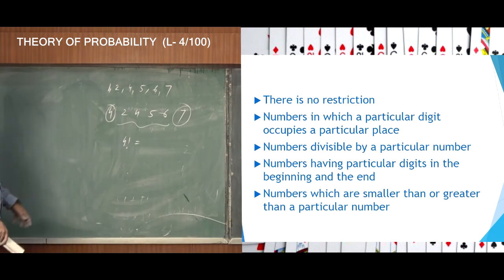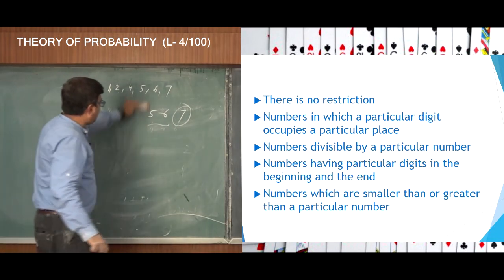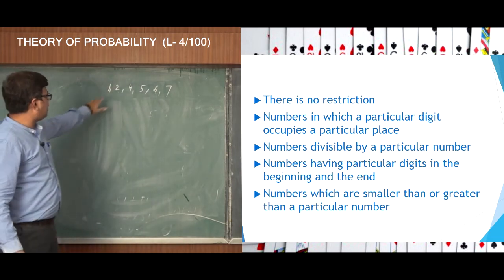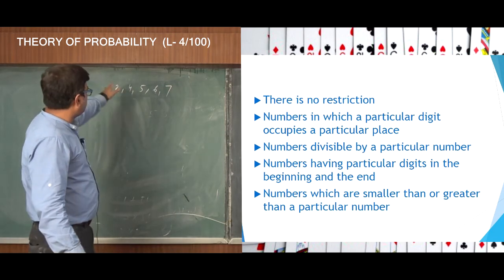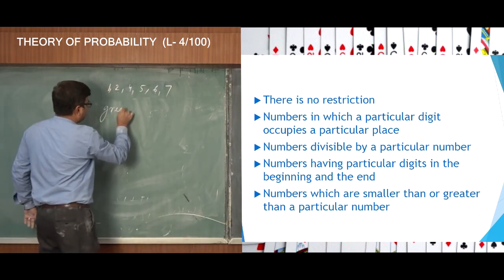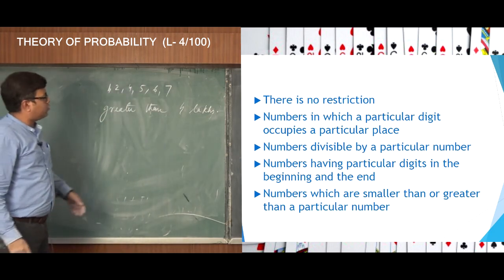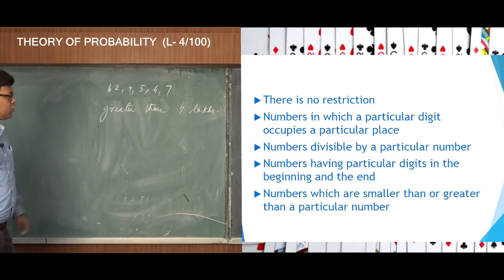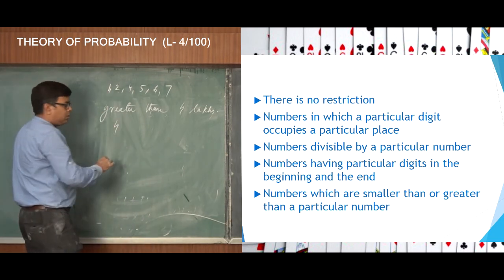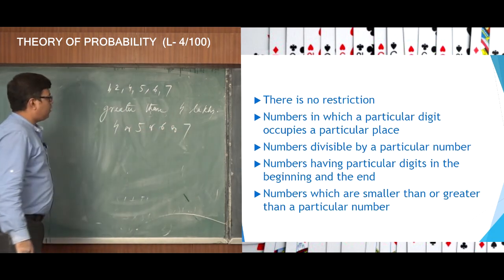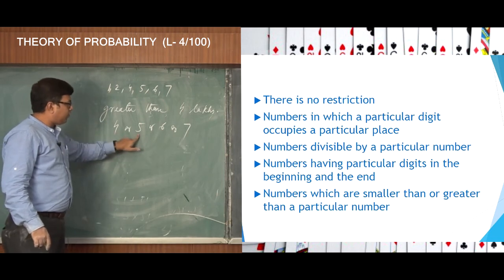Lastly, we consider numbers which are smaller than or greater than a particular number. Let us say I want to form numbers with these digits which are greater than 4 lakhs. For a number to be greater than 4 lakhs, the digit in the lakhs position must be either 4, 5, 6, or 7.